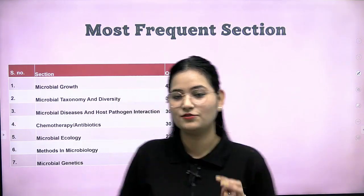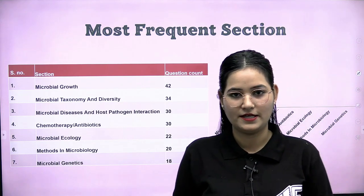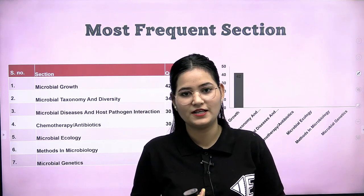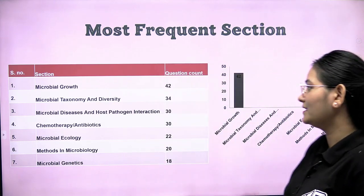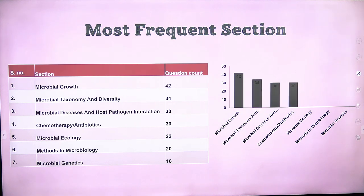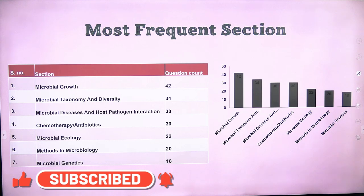I have mentioned seven sections. Microbial growth has the highest weightage with 42 questions. The second section is microbial taxonomy and diversity, which has 34 questions. Third is microbial disease and host-pathogen interaction with 30 questions. Chemotherapy and antibiotics also has 30 questions. Microbial ecology has 22 questions, methods in microbiology has 20 questions, and microbial genetics has 18 questions.